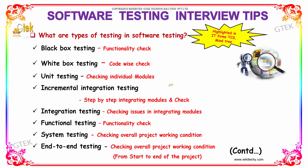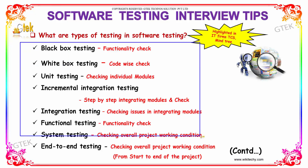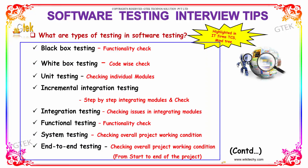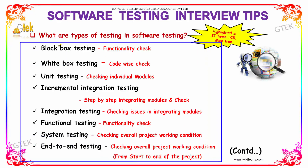What are the types of testing in software testing? The types of testing in software testing are as follows. Black box testing, which is used for functionality check. White box testing, which is used for code-wise check.